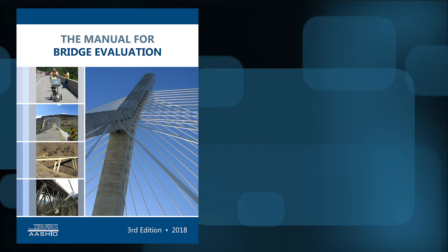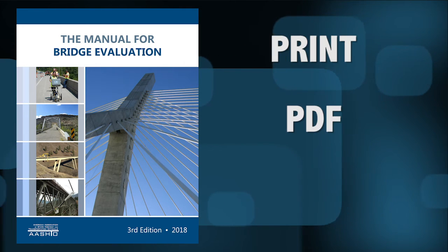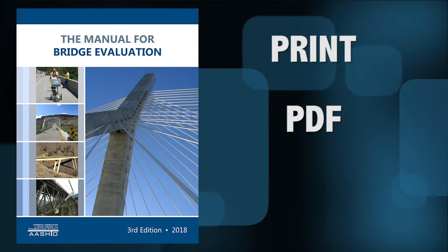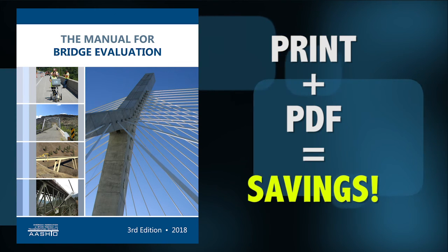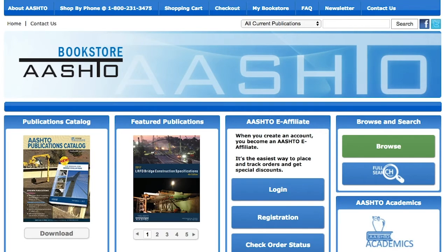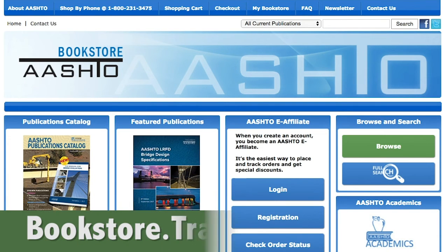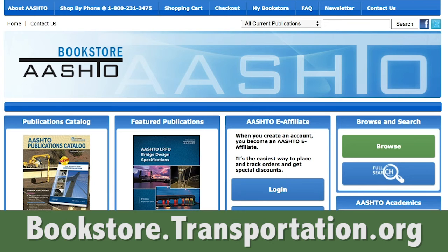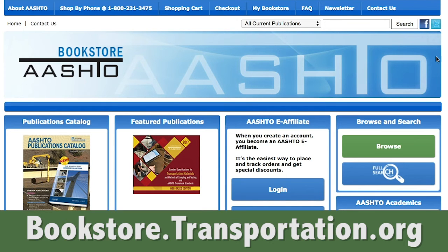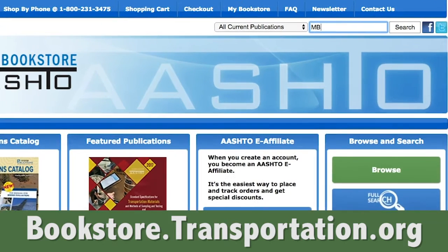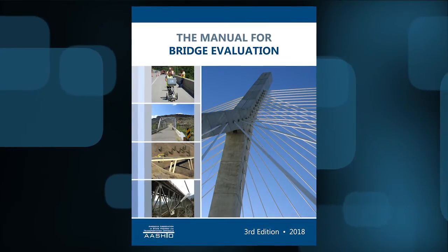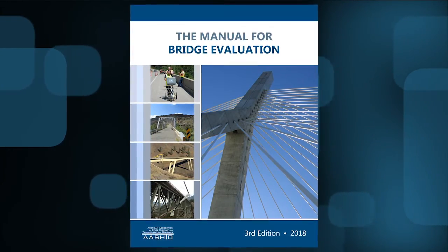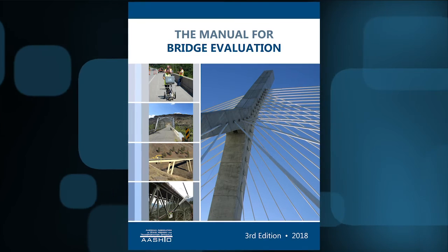The manual can be purchased in print, as a downloadable PDF, or in a set that includes both the print and PDF versions at a discounted rate. To purchase a copy, visit the AASHTO Bookstore online at bookstore.transportation.org and search by the publication's item code MBE-3. Thanks for watching this overview of the Manual for Bridge Evaluation, 3rd Edition.